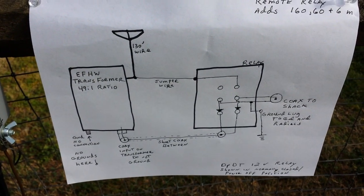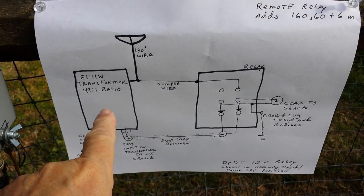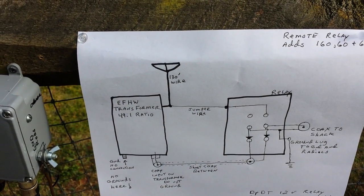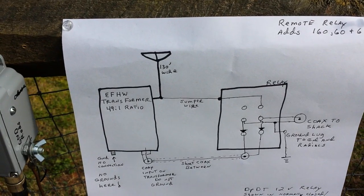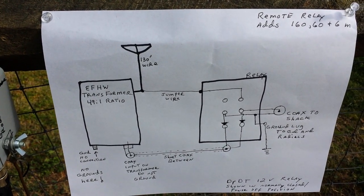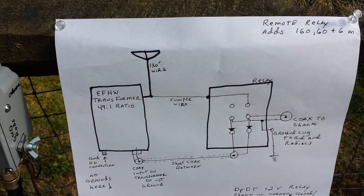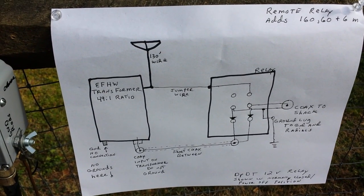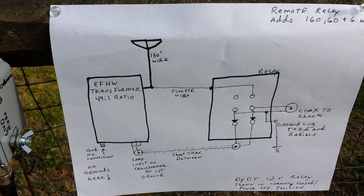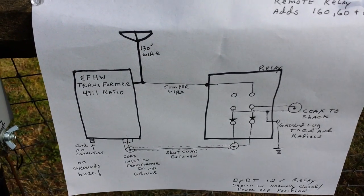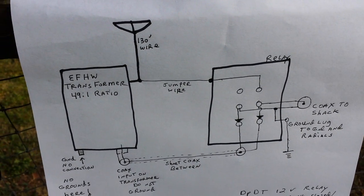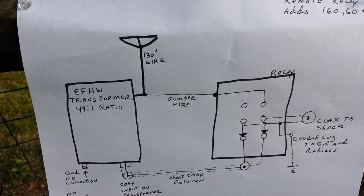First of all, what we have is an end-fed half-wave transformer here. Now these are being sold by a company called My Antennas. This could be the My Antennas EFHW 8010. It covers 80 through 10 meters. MFJ also sells one similar to this and there's a lot of people home brewing these.